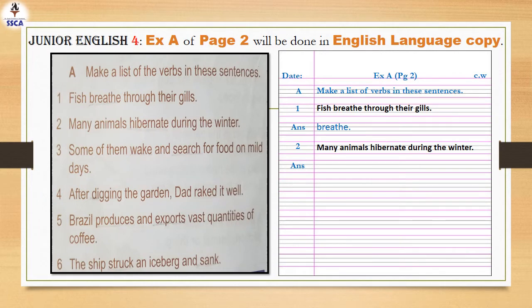After that, write question number 2: Many animals hibernate during the winter. Hibernate means sote rehna — many animals stay sleeping during winter. So what is the verb in this sentence? It's hibernate — the action animals perform is hibernate.